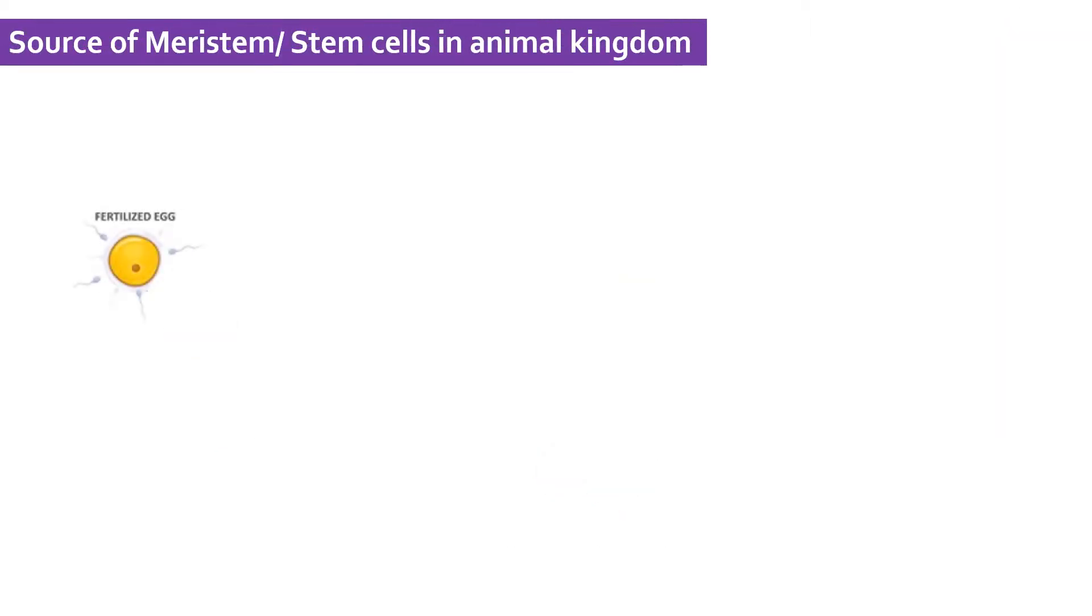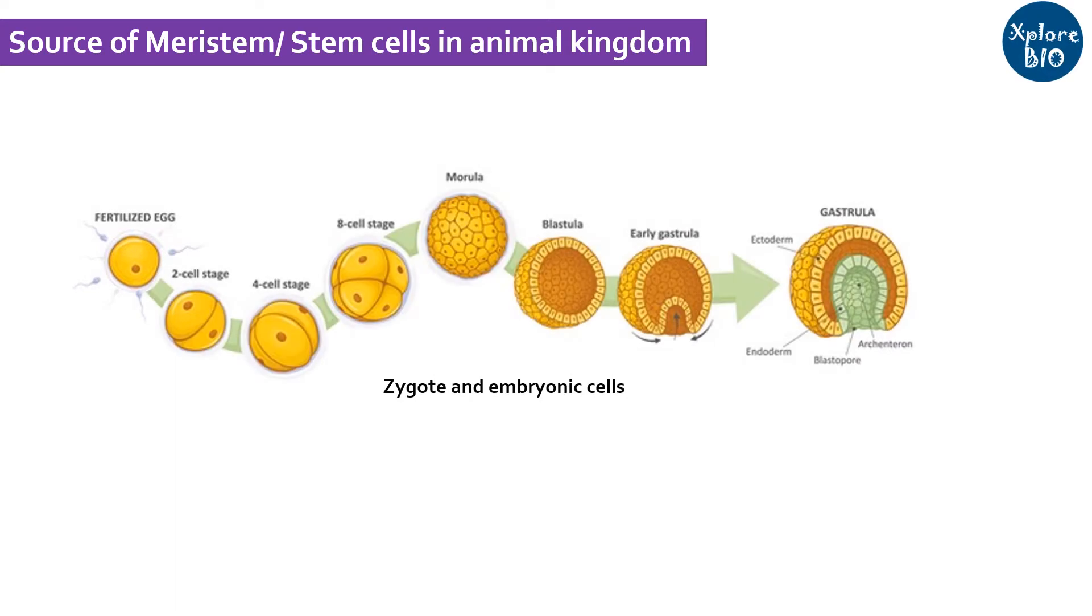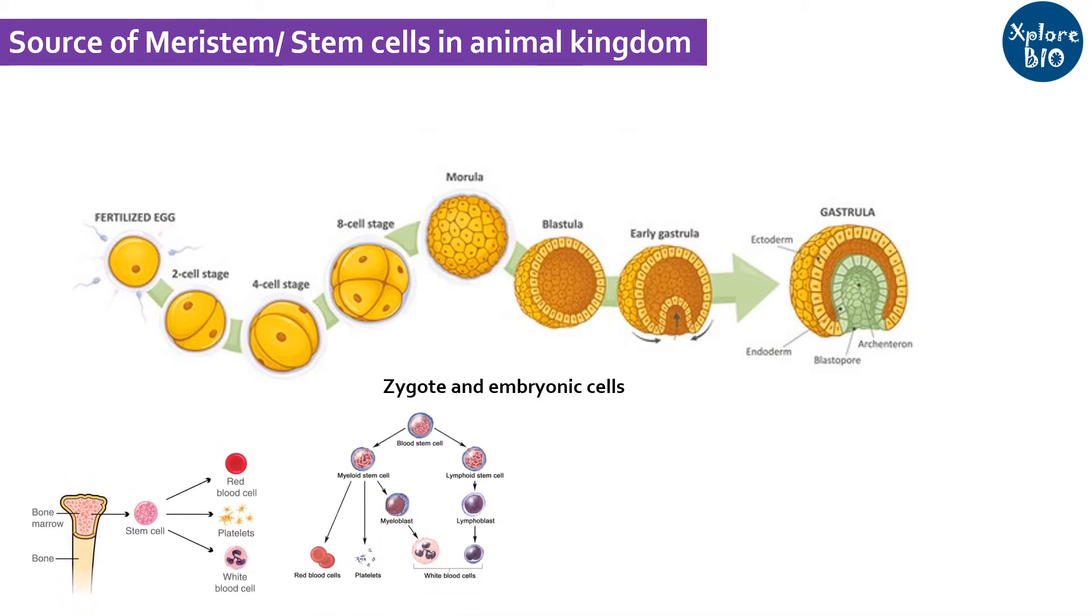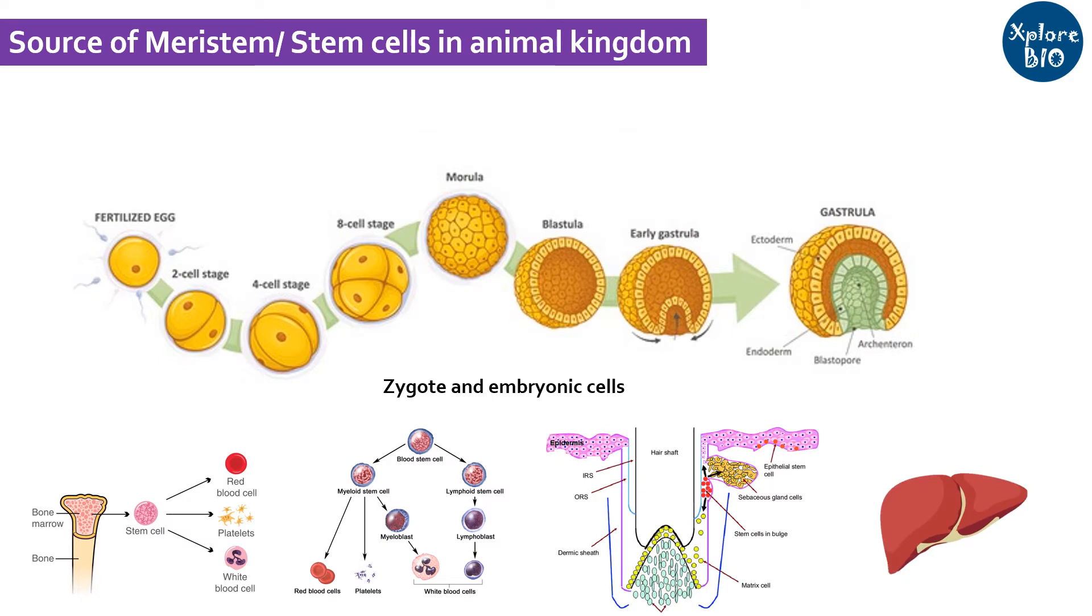In case of animals, zygote that forms after sperm fuses with egg is the primary source of meristem or stem cells. Other than this, stem cells are also present in bone marrow, blood, skin, liver and most of the other tissues. But these too, to some extent, are destined to give rise to only a specific feed of cells. For example, stem cells in skin can form only skin but not any other tissue.